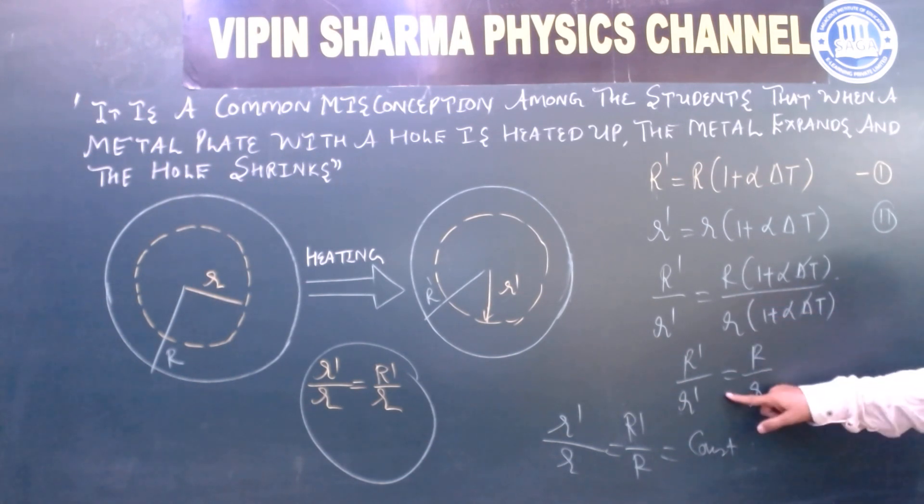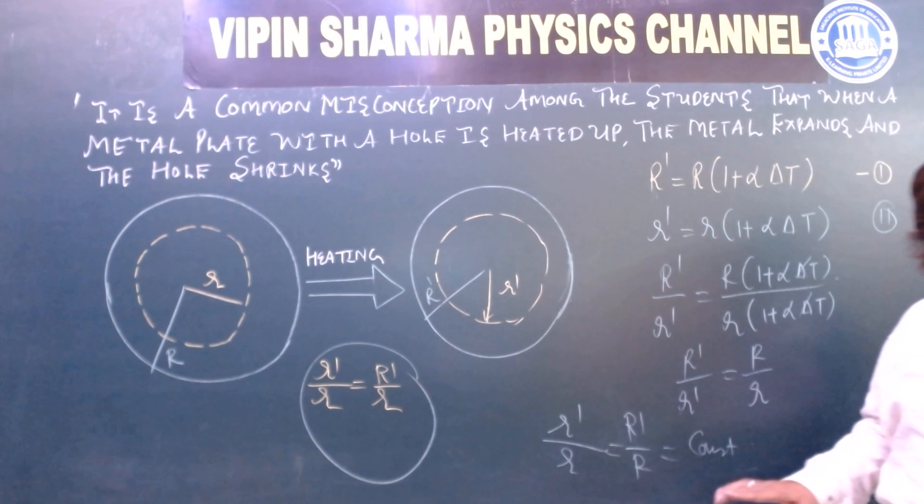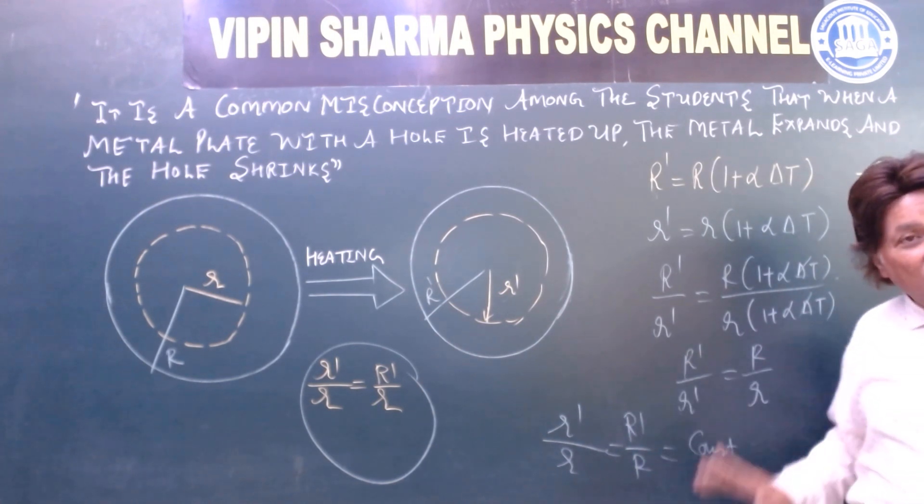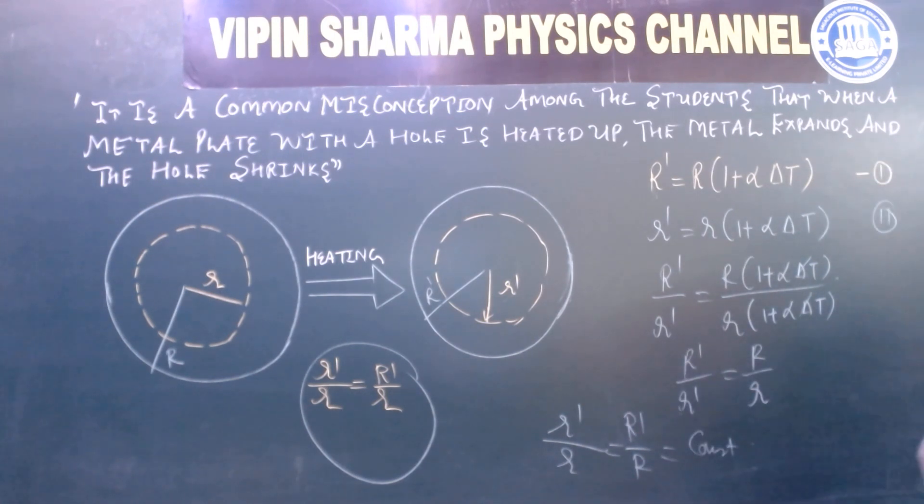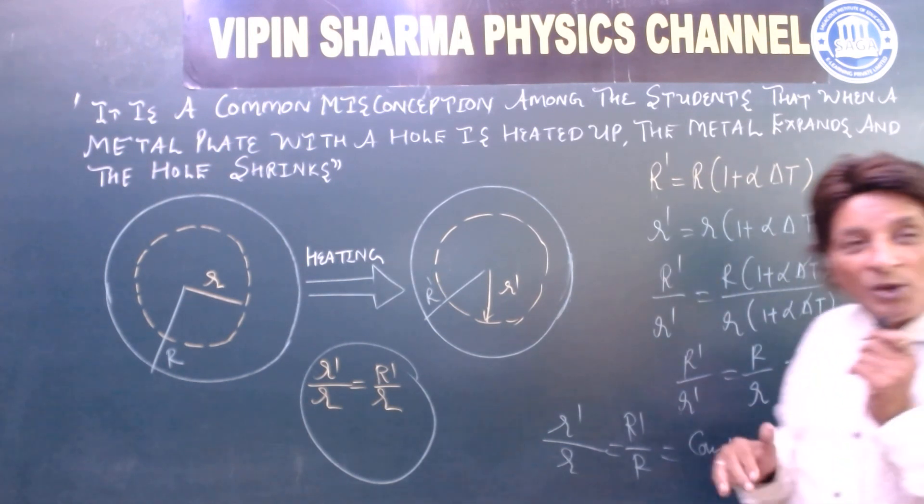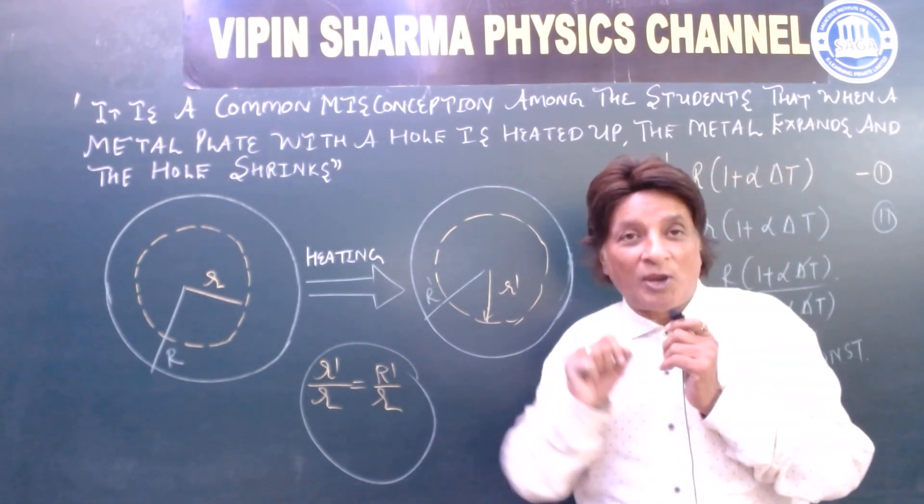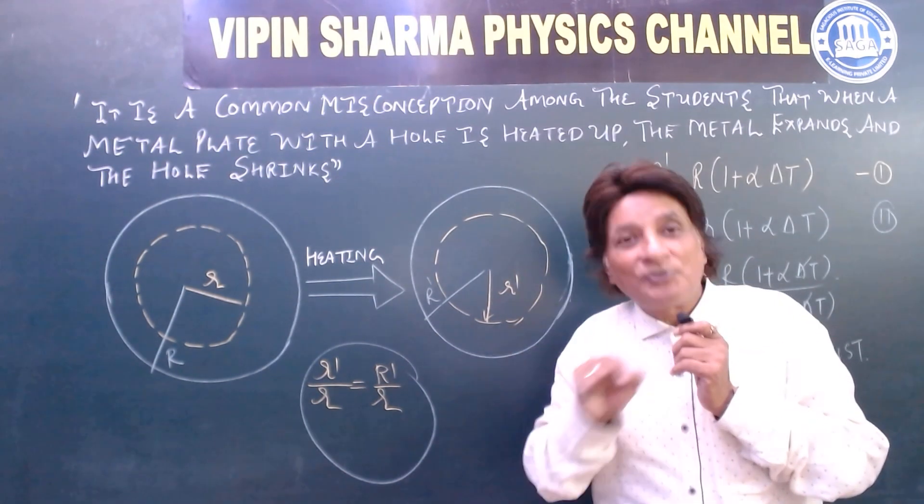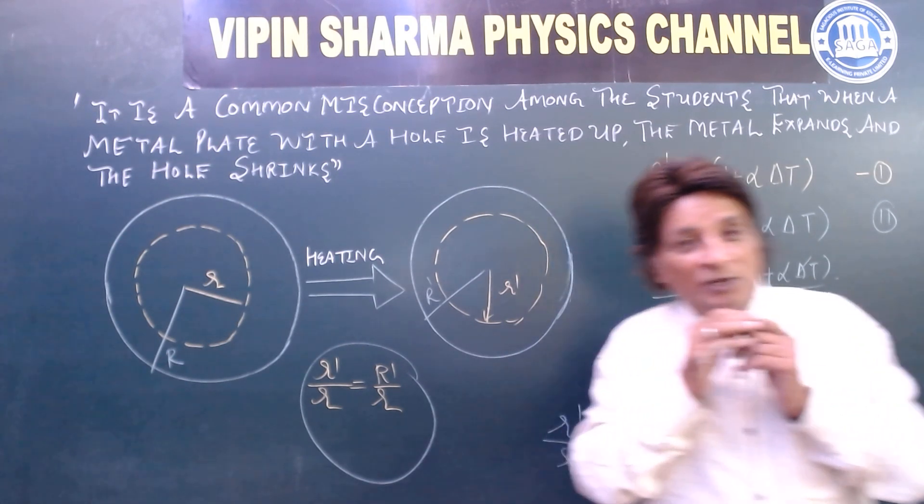R'/r' equals R/r. It means that the ratio will remain a constant value. When the ratio remains constant, it means that there will be no shrinking. It will change proportional to the heated up.